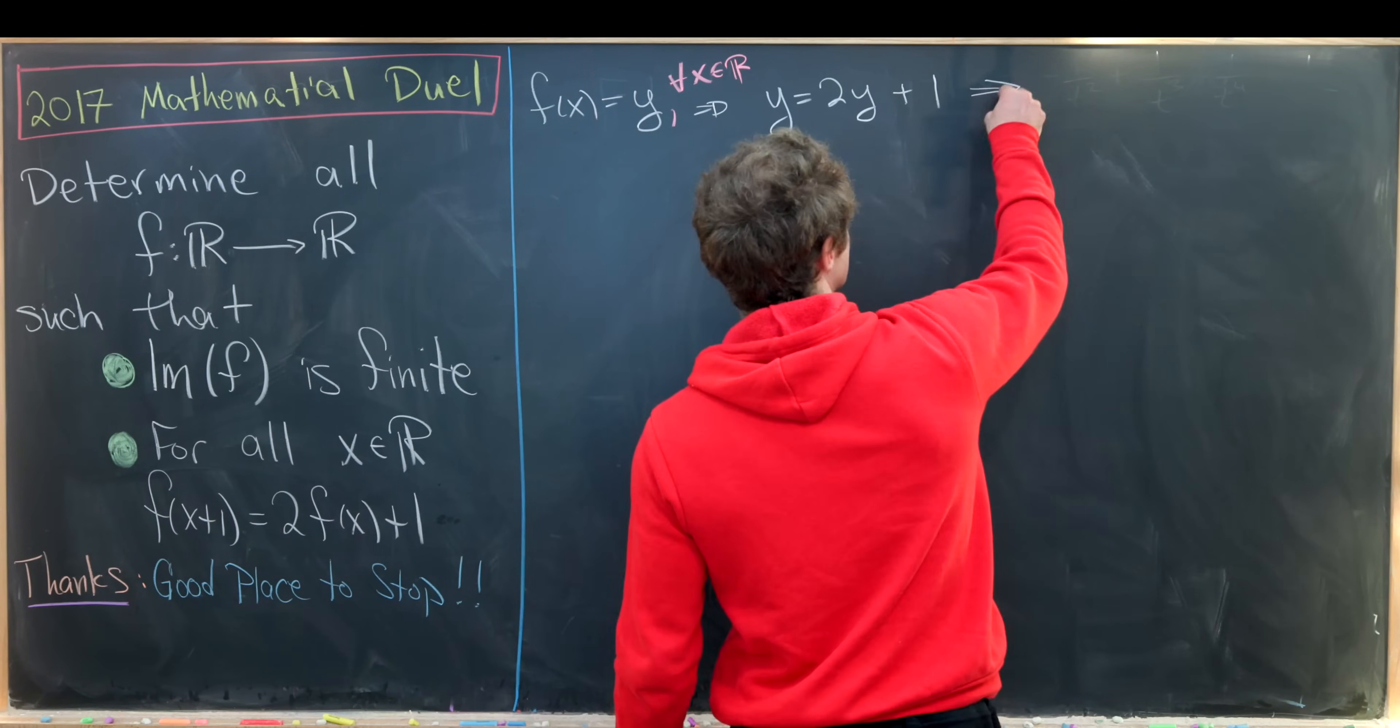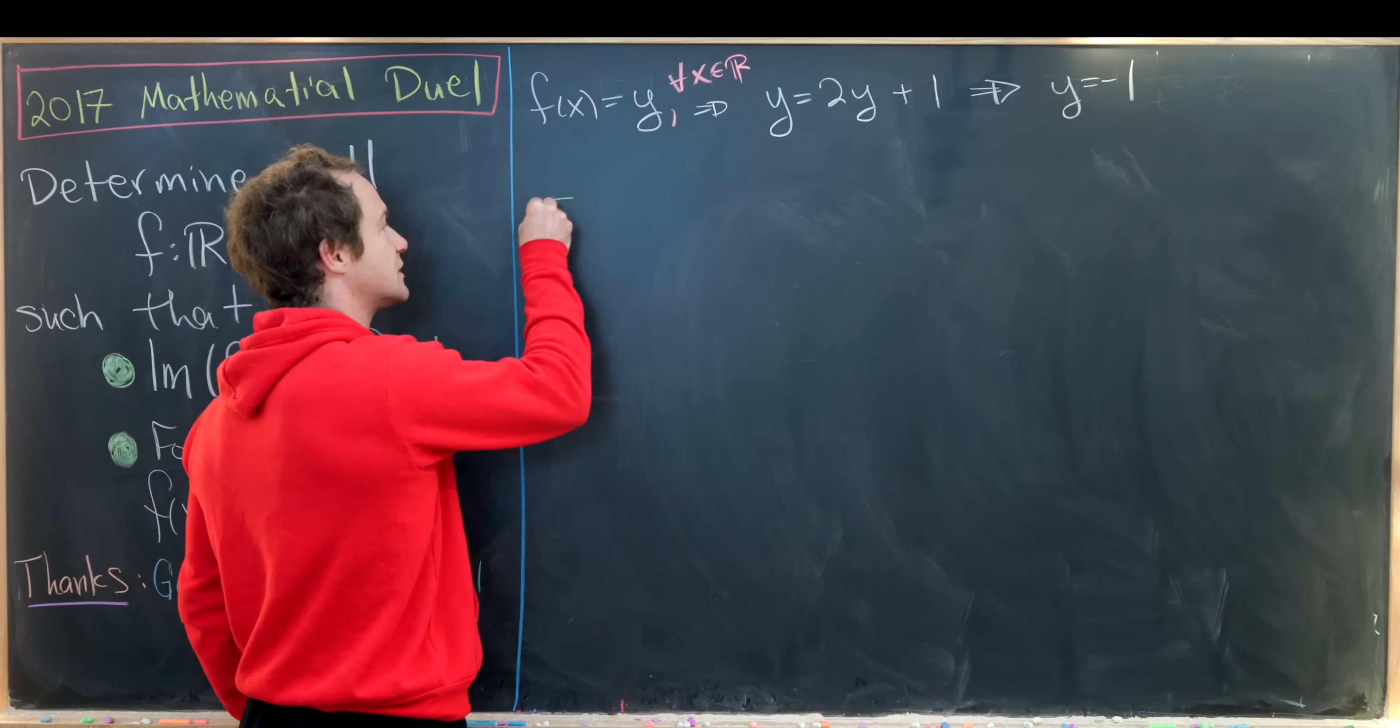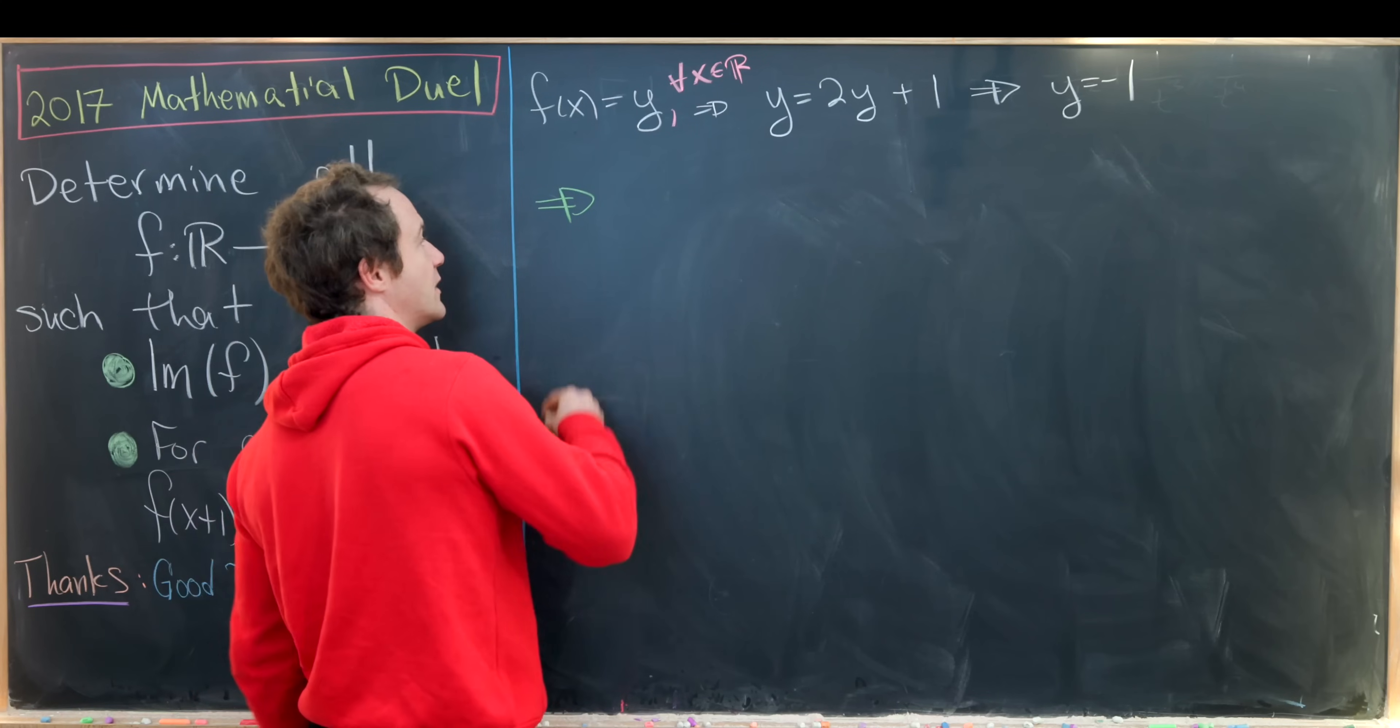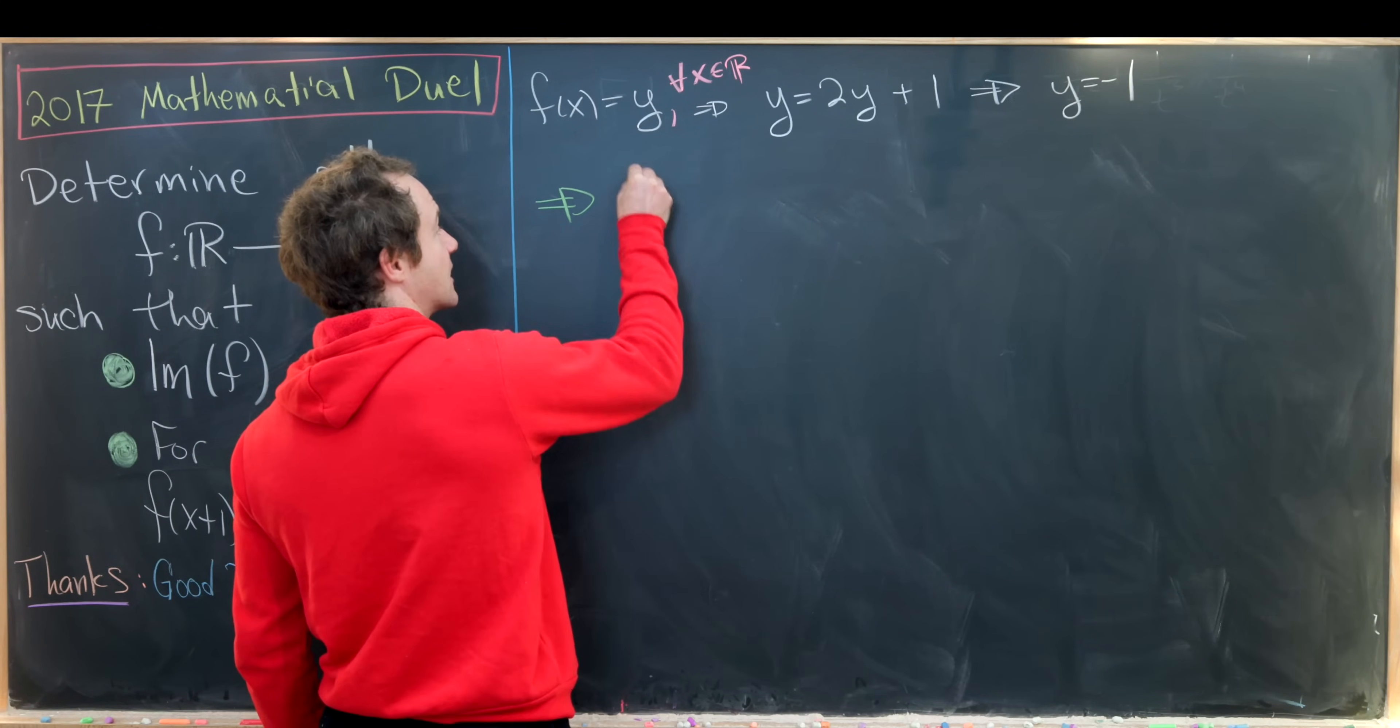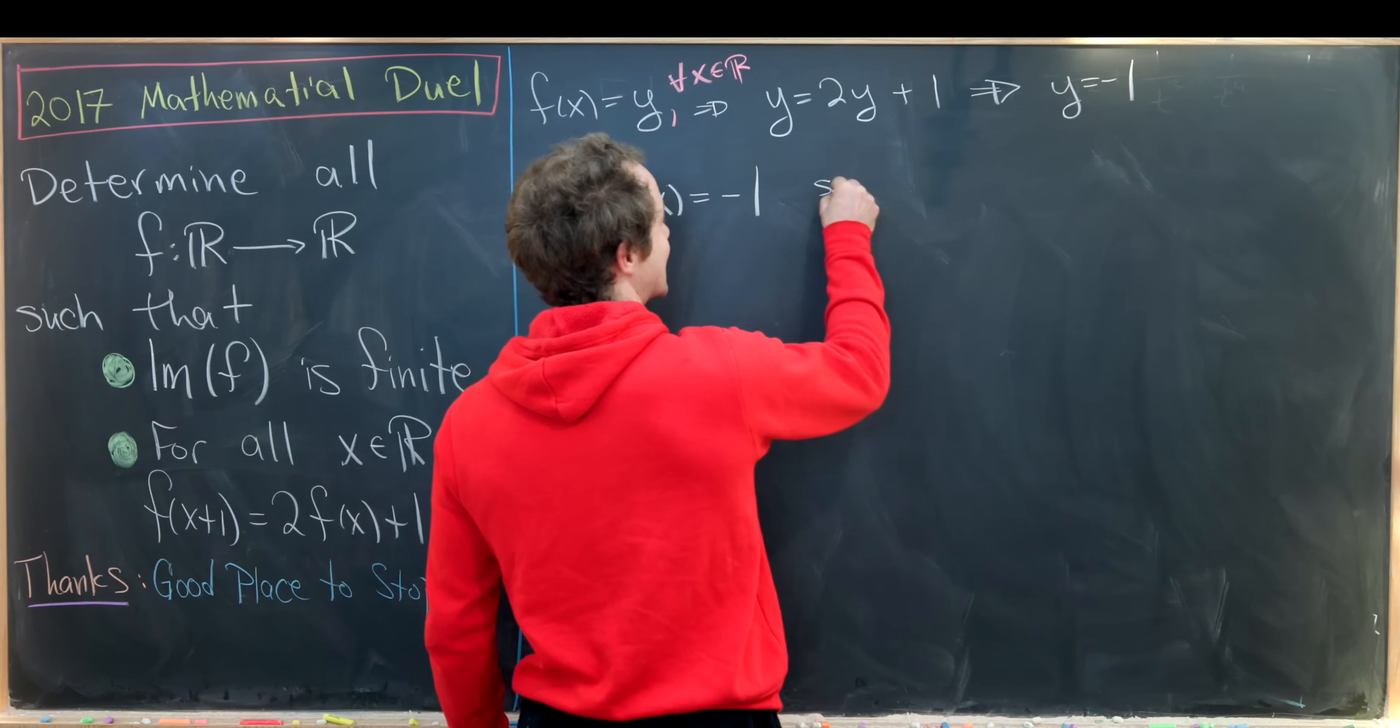easy linear equation to solve. That gives us y equals minus 1. So what have we done so far? So far we have shown that the constant function f(x) equals minus 1 satisfies